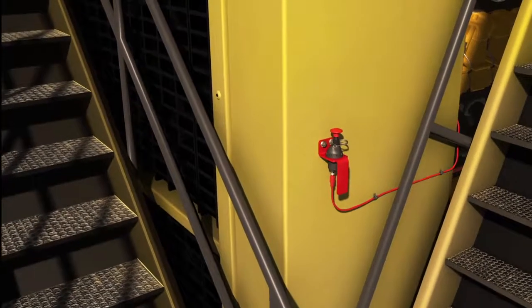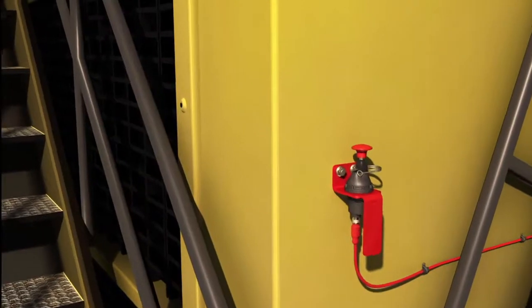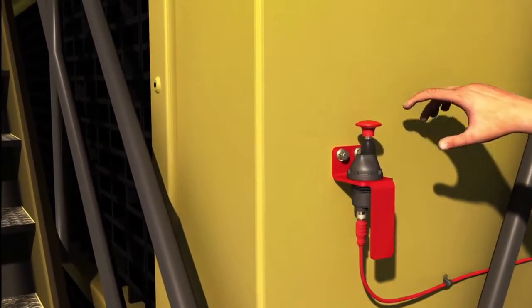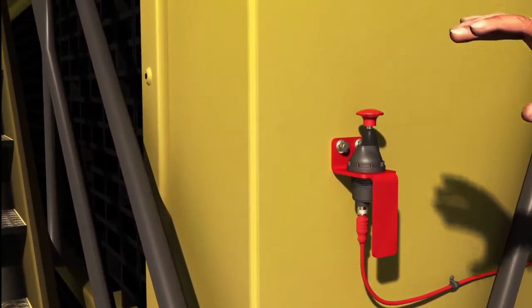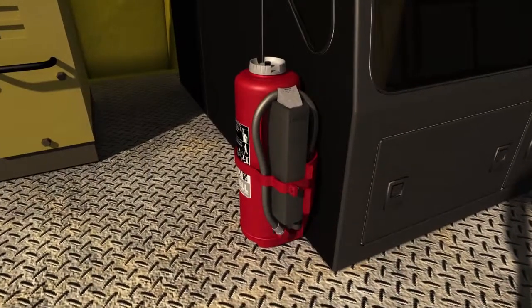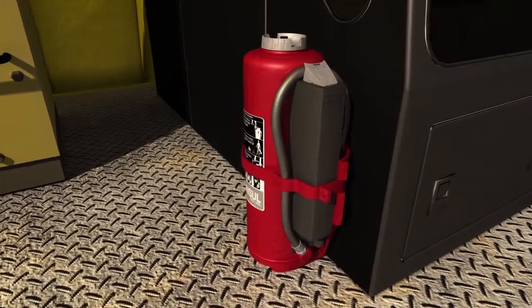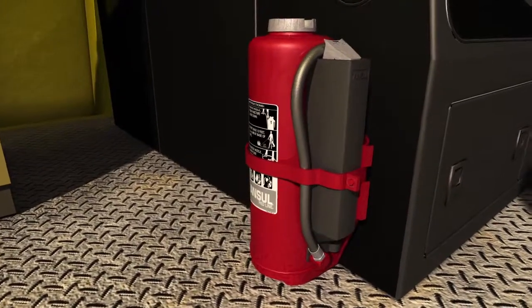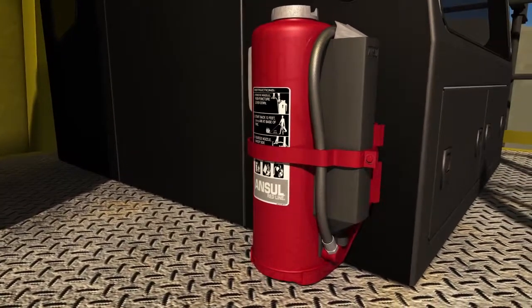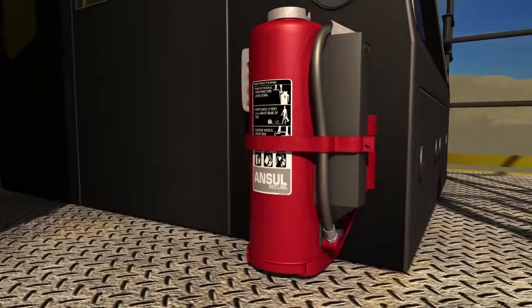The system is also equipped with electric manual actuators. These actuation points are located along the paths of egress. And when manual firefighting is required, count on the trusted and proven Ansel Redline Cartridge-Operated Portable Fire Extinguishers, the gold standard for industrial protection.